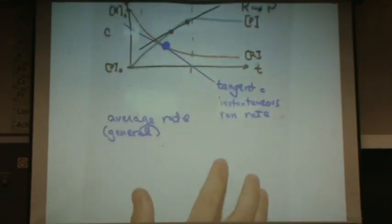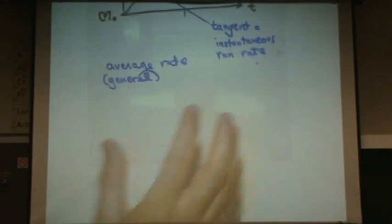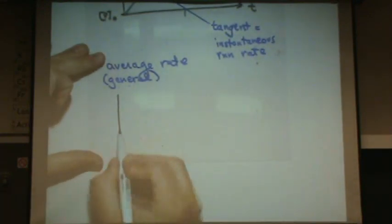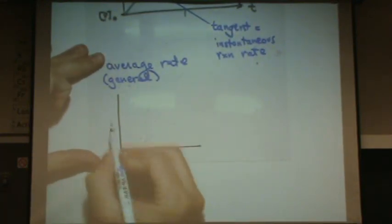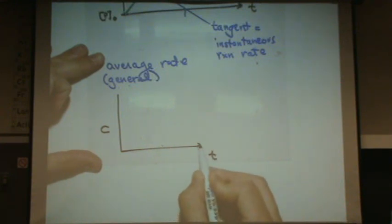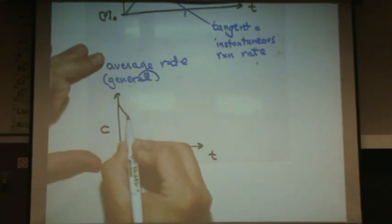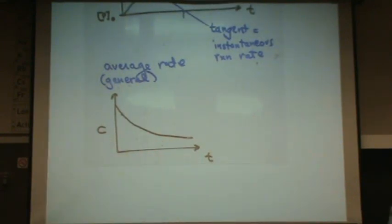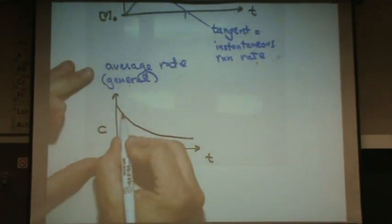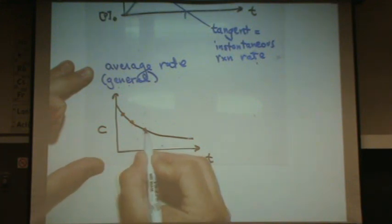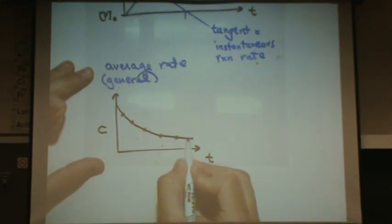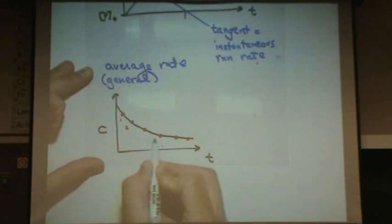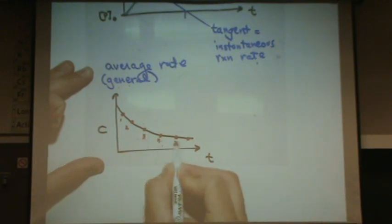So if I redraw this a little bit, just to make it a little more visible. Let's just say, again, we have concentration versus time. And we have a concentration drop going like that. And I know, let's say I know a bunch of points on this here. I've measured them on my instrument, or somewhere in my lab. These are points one, two, three, four, five, and six.